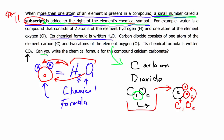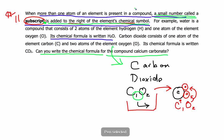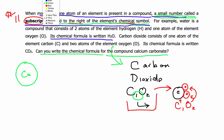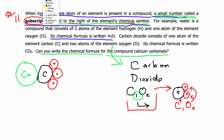Can you write the chemical formula for the compound calcium carbonate? There would be one atom of calcium, one atom of carbon, and then some atoms of oxygen. Pause the recording and see if you can write the chemical formula with the proper subscripts, then come back and take a look.